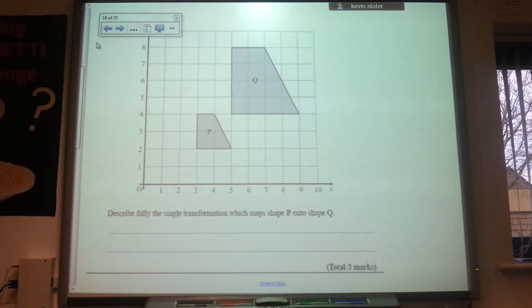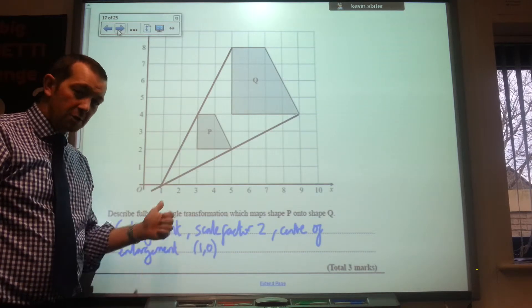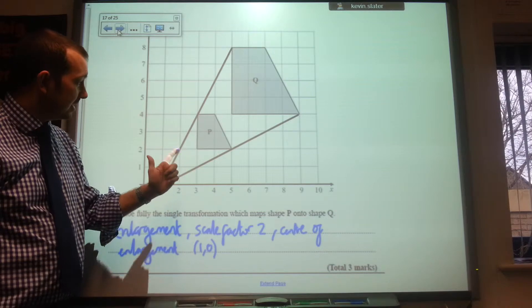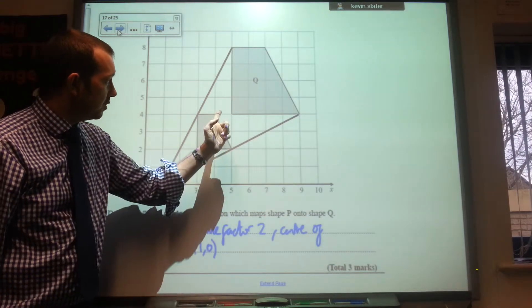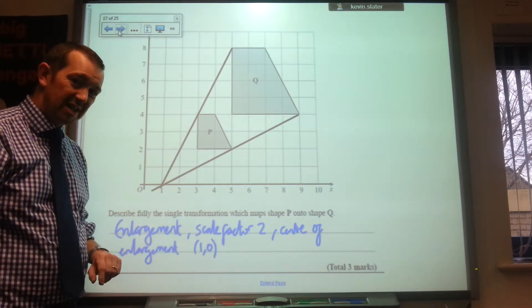Describe fully the single transformation which maps shape P onto shape Q for three marks. Okay. And there, for one mark, it's an enlargement. Secondly, scale factor is scale factor two. That's two. That's four. So it's got each line twice as big. The centre of enlargement is one, zero.